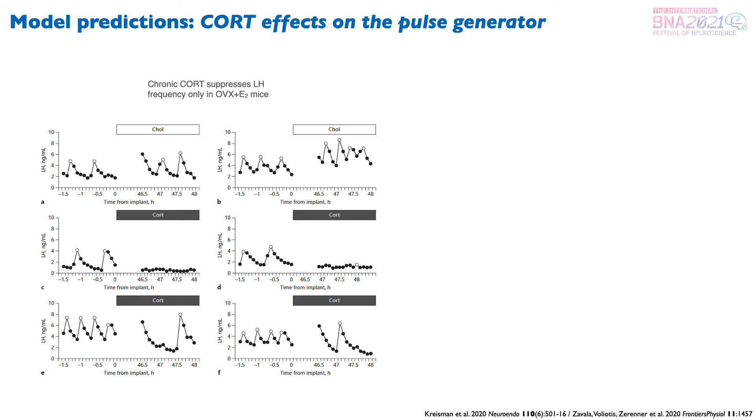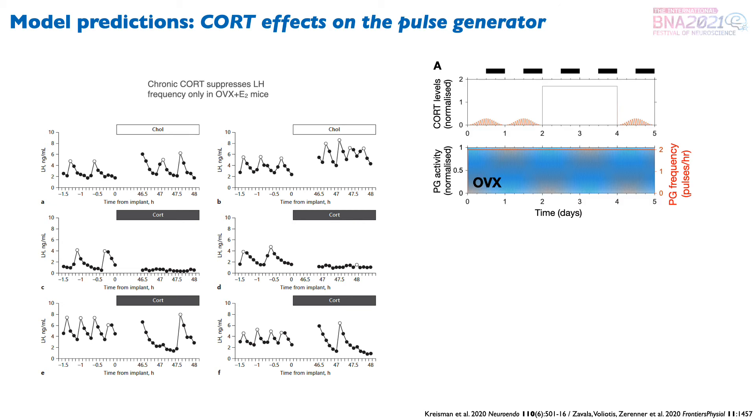Next, we wanted to see if our model could reproduce a recent result where chronic cortisol exposure suppresses LH pulsatility only in ovariectomized mice with an estradiol implant. To do this, we simulated the effects of constant high levels of cortisol over two days in ovariectomized mice and found that the model predicted no change in the pulse generator frequency.